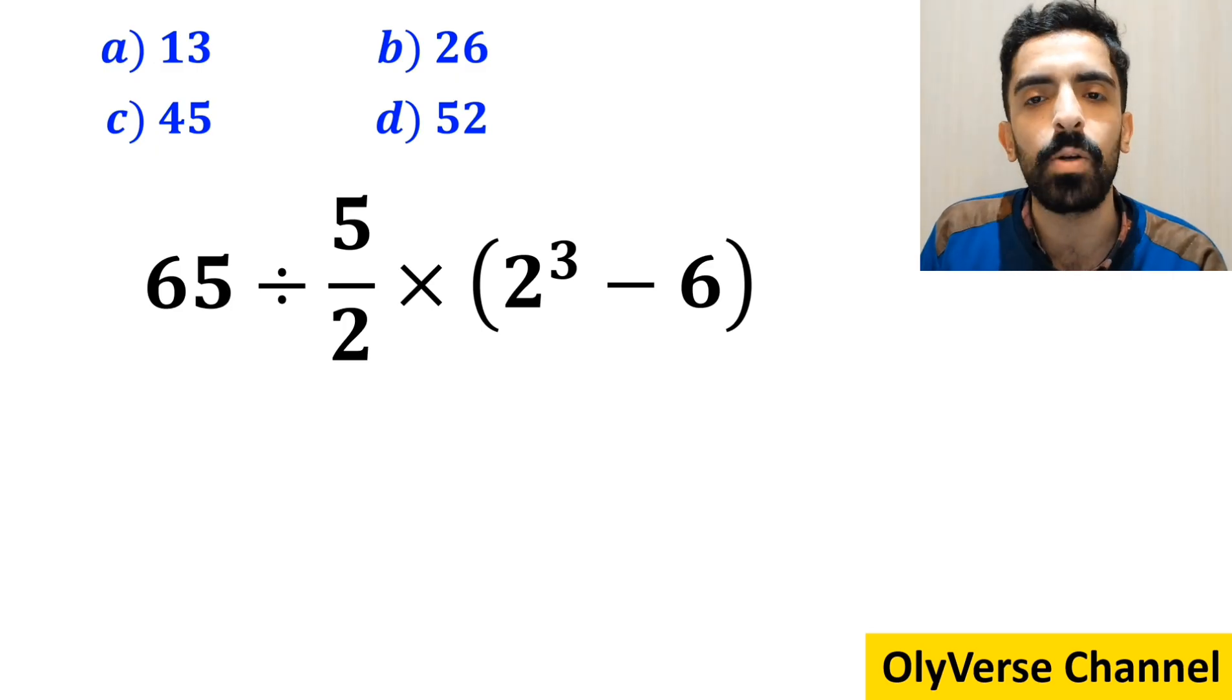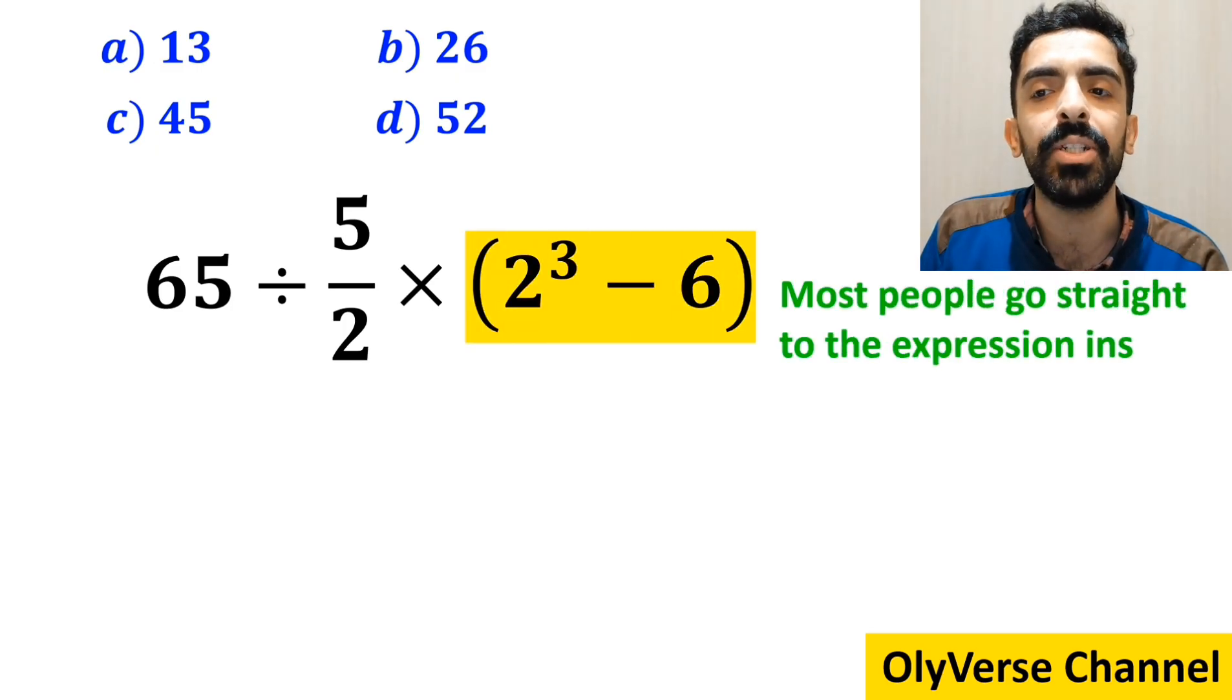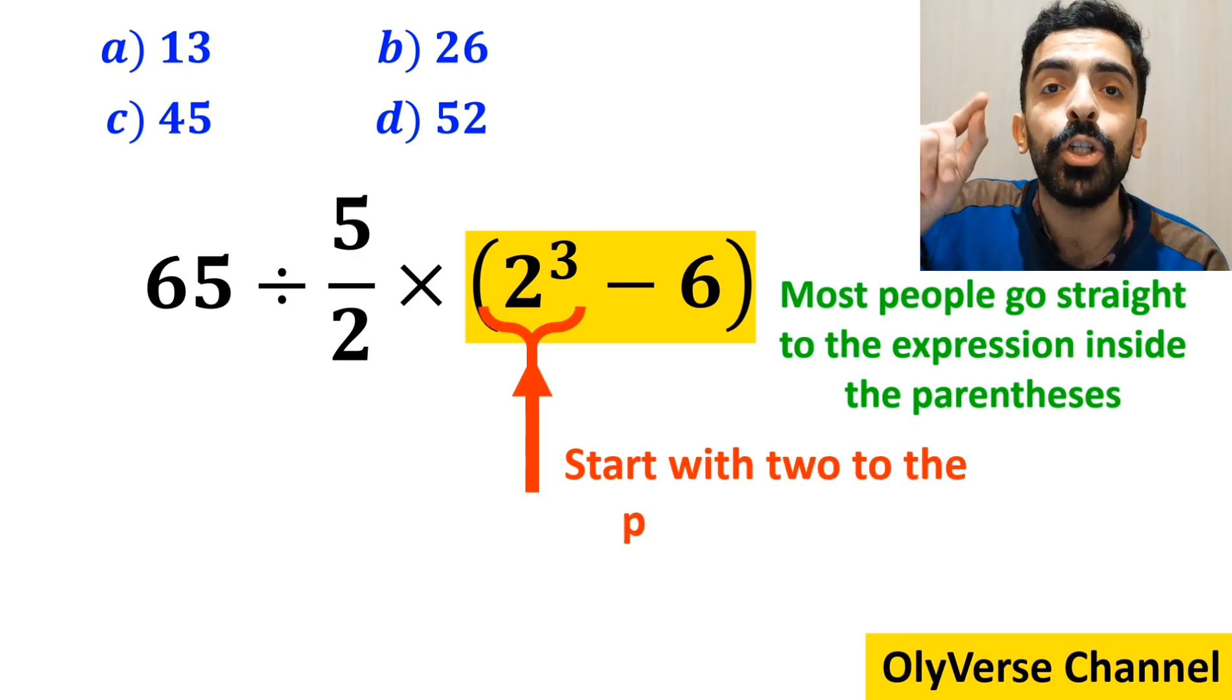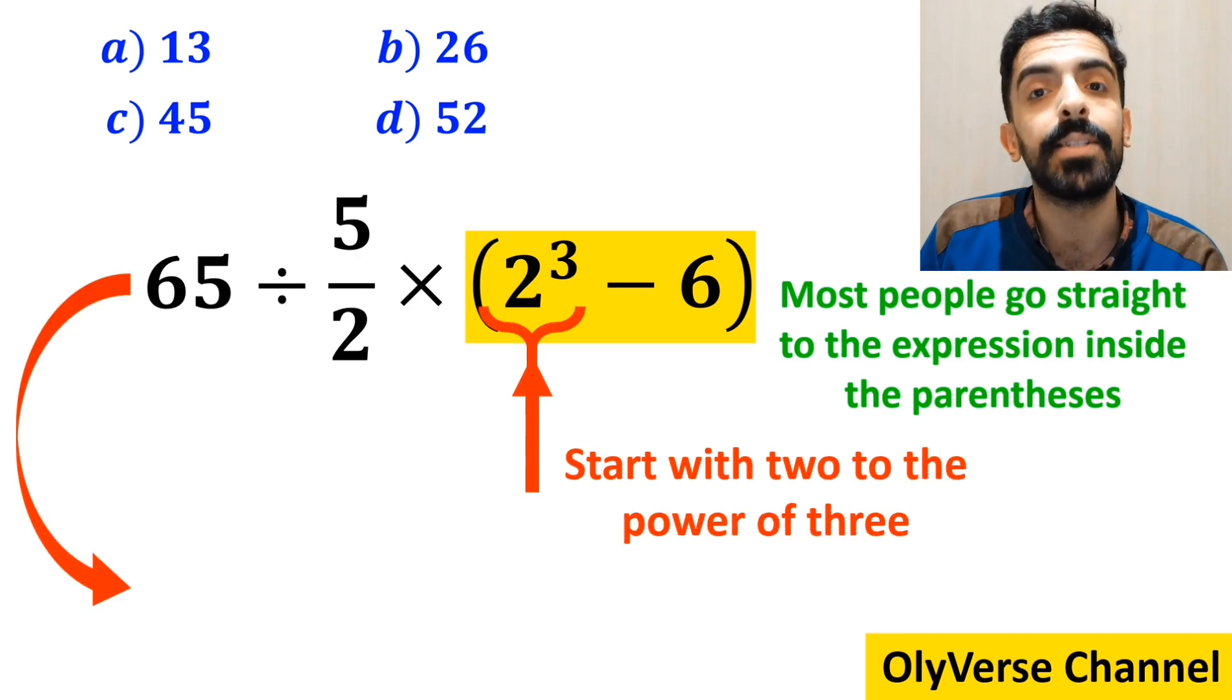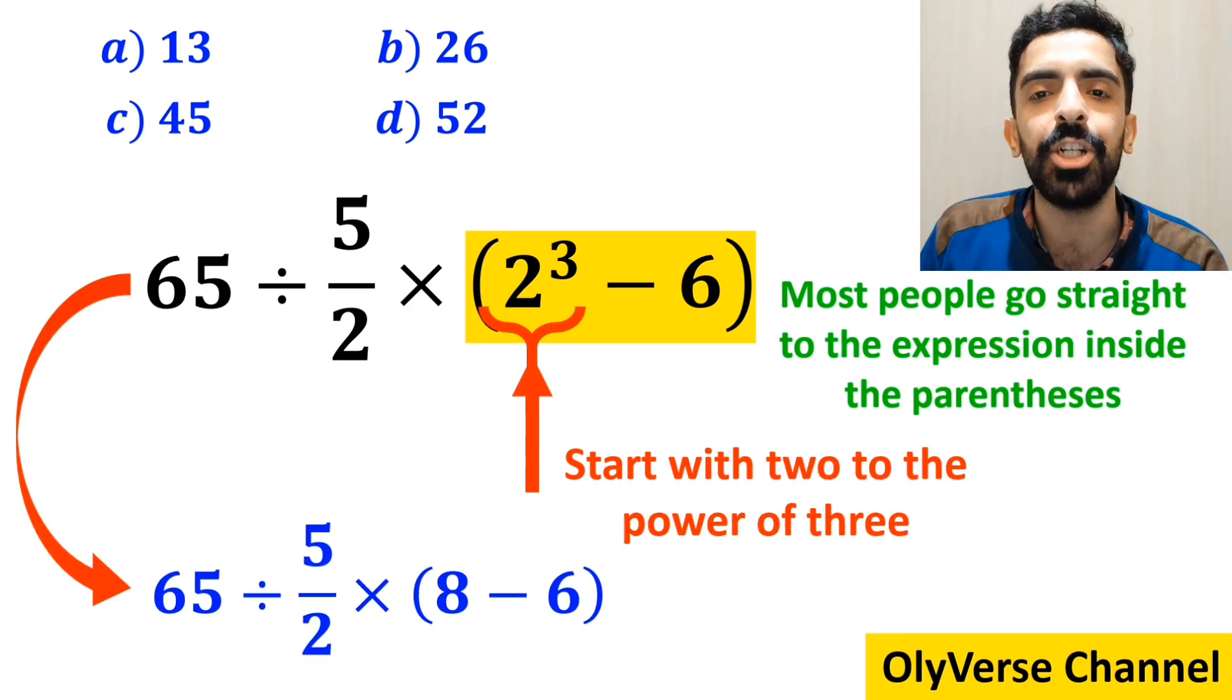In the first step of solving this question, most people go straight to the expression inside the parenthesis and start with 2 to the power of 3. So instead of the original expression, they write 65 divided by 5 over 2 times 8 minus 6 inside the parenthesis.